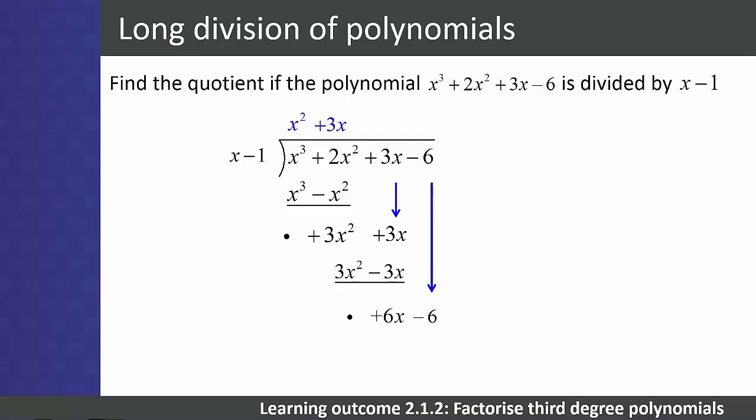Step 11. Write positive 6 in the quotient above positive 3x. Step 12. Multiply x - 1 by 6 and write the answer below 6x - 6. The remainder is 0. So our quotient is x² + 3x + 6.